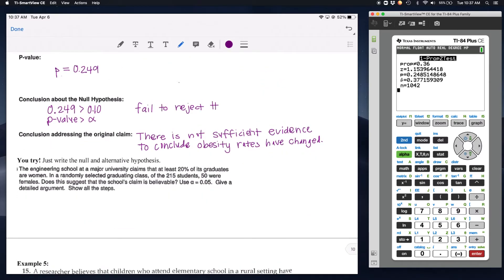Let's look at the next one. On this one I don't want you to actually go through and do it all. I just want you to write the null and alternative hypothesis. An engineering school at a major university claims that at least 20% of its graduates are women. In a randomly selected class of 215 students, 50 were females. Does this suggest the school's claim is believable? We've got our null and we've got our alternative. We decide proportion or mean. In this case we're looking at a percentage of people, we're looking at a proportion. Remember the proportion we're comparing it to is we want it just to be equal to 20% that they talked about at the beginning. But then our alternative is that we actually think this proportion is greater than the 20%, at least that many.